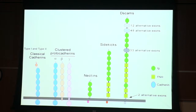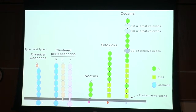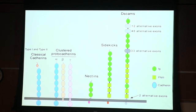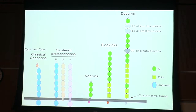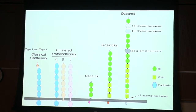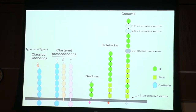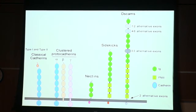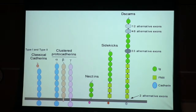The proteins we're interested in — these are generally how adhesion proteins are organized. This represents a cell membrane. They're multi-domain proteins. I'll be talking first about what are called classical cadherins. They have five immunoglobulin-like domains, a transmembrane region, and a cytoplasmic region. I'll also be talking about proto-cadherins and nectins. They all look like this — multi-domain proteins with some connection to the cytoplasm.